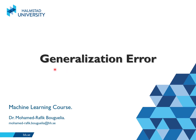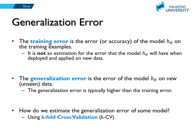Let's talk about how to estimate the generalization error. The training error is the error the model achieves on training examples — this is not an estimation of the error the model will have when deployed on new data. To estimate that, we have the generalization error, which is the error on new unseen data. We can estimate this using k-fold cross-validation. In general, the generalization error is higher than the training error, because we fit our model to the training data.